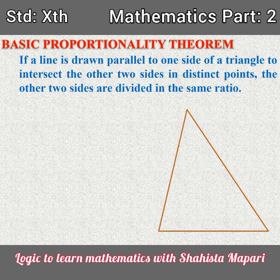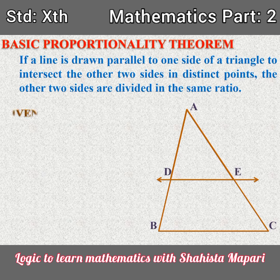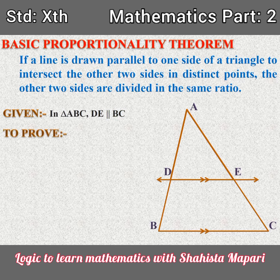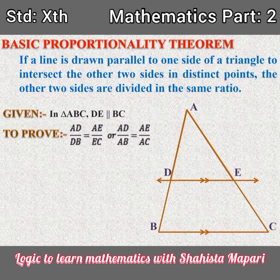First we will draw a triangle. Give the name ABC, and now this is the parallel line — as you can see here, DE. So, given in triangle ABC, DE is parallel to BC. As you can see, this DE is parallel to BC.